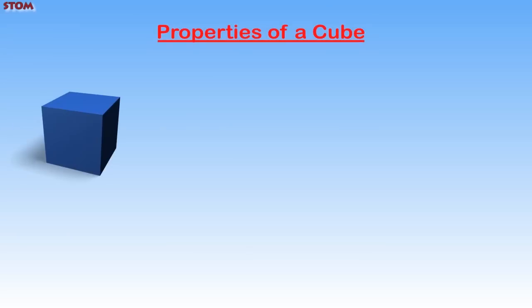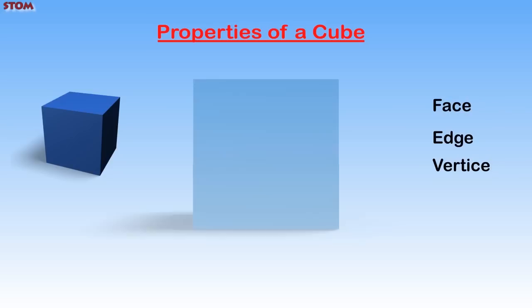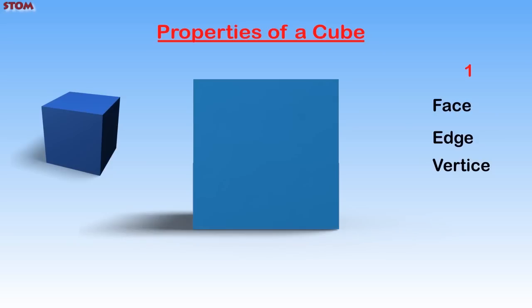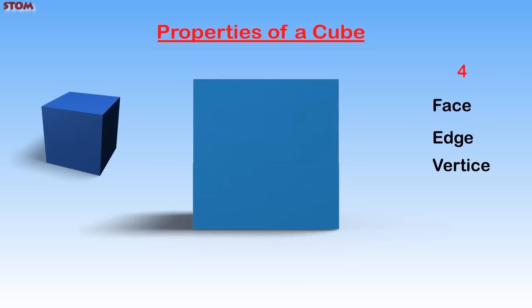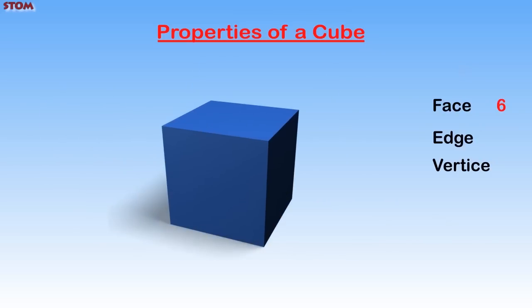Properties of a Cube. The properties of a cube include the face, edge, and vertices. For a cube, let's count the faces: one, two, three, four, five, and six. The cube has six faces.